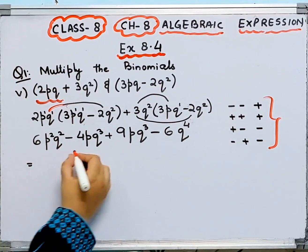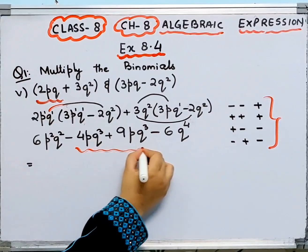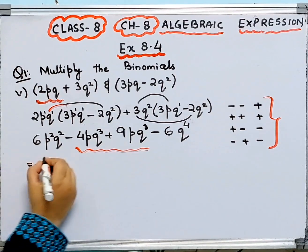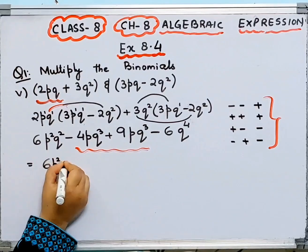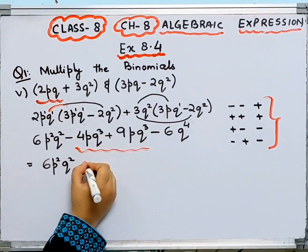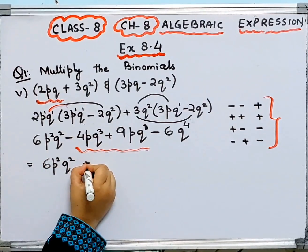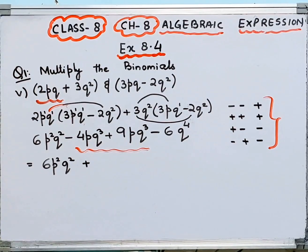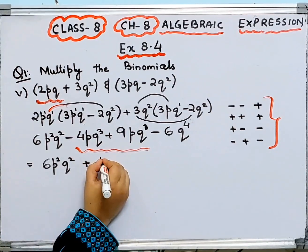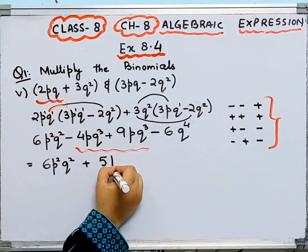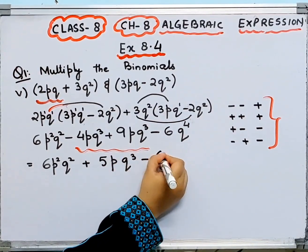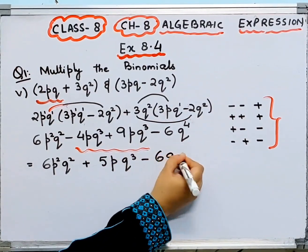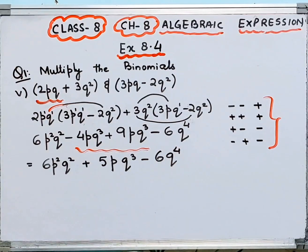Now simplify — both like terms are pq cubed. So we have 6p squared q squared, then 9 minus 4 is 5, giving plus 5pq cubed, minus 6q to the power 4. That is your answer.